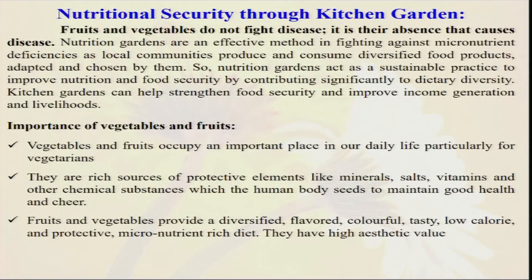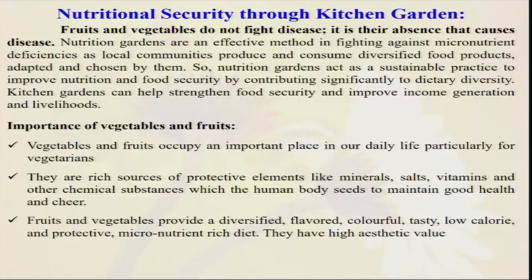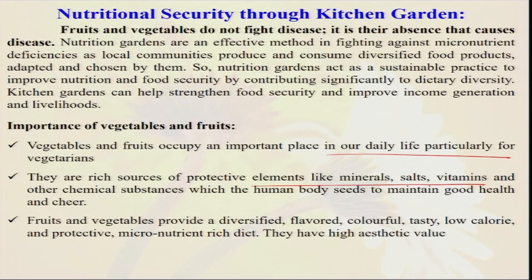Fruits and vegetables do not fight disease, but it is their absence that causes disease. You always have to take these types of nutrients so that our defense mechanism will be present. Vegetables are important in our daily life, especially for vegetarians, because vegetarians are not taking different types of eggs, fish, or proteins through meat. Food and vegetables play a major role in providing energy and different types of vitamins and minerals. They are also a resource of protective elements and provide a diversified, colorful, tasty, low-calorie food with aesthetic value.